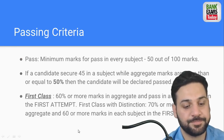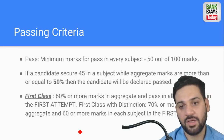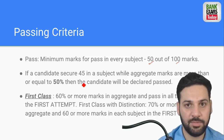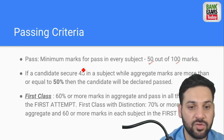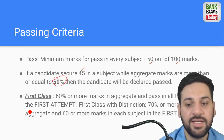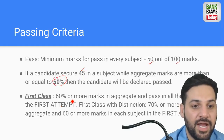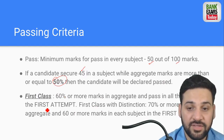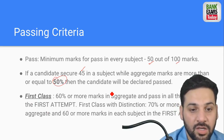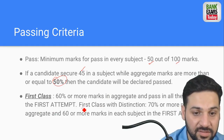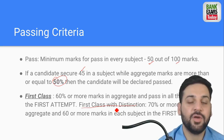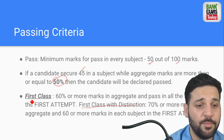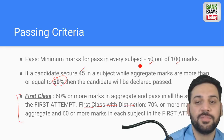To pass the JAIIB exam, you need to get 50 marks out of 100. There are three papers. If in all three exams you score 45 and the aggregate is 50, you will be declared passed. If you get 60% aggregate marks in the first attempt, that is first class. If you get 70% in the aggregate and 60% in each subject in the first attempt, that is considered first class with distinction. The most important part is that 50% is the passing mark.